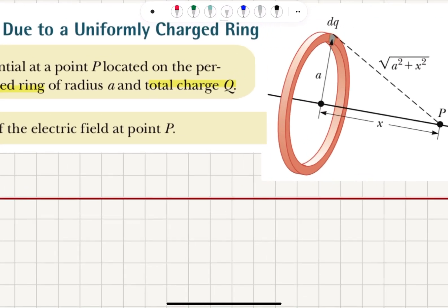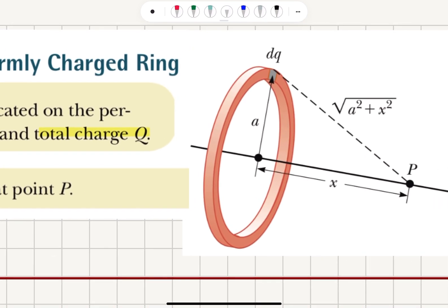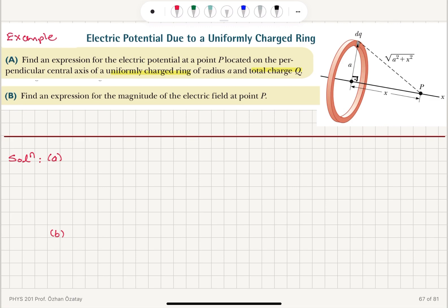Here is our uniformly charged ring. We look at a charge element dQ. This charge element dQ on the ring is at a distance of square root of (a² + x²) to point P. As you can see, this is a right triangle, so that is the hypotenuse. The contribution to the potential due to this charge element will be dV_P = k·dQ / √(a² + x²).